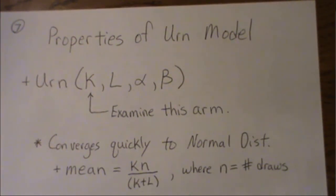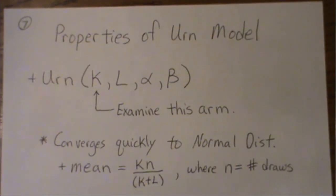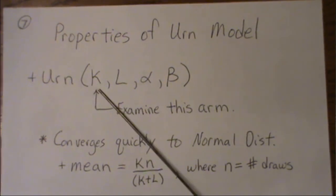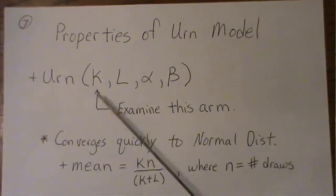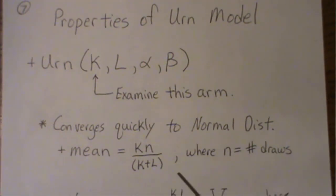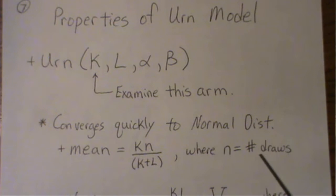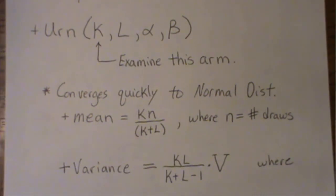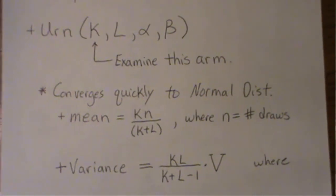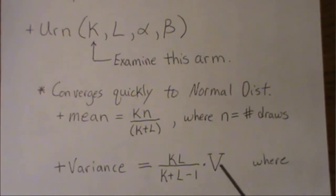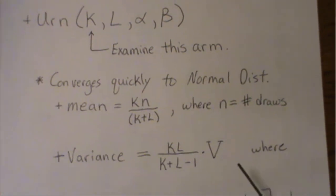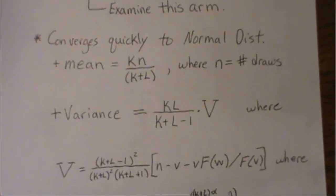The mean of this treatment arm is K*N over (K+L), where N is the number of draws, and the variance is a closed-form expression from the manuscript where V is defined by that formula.